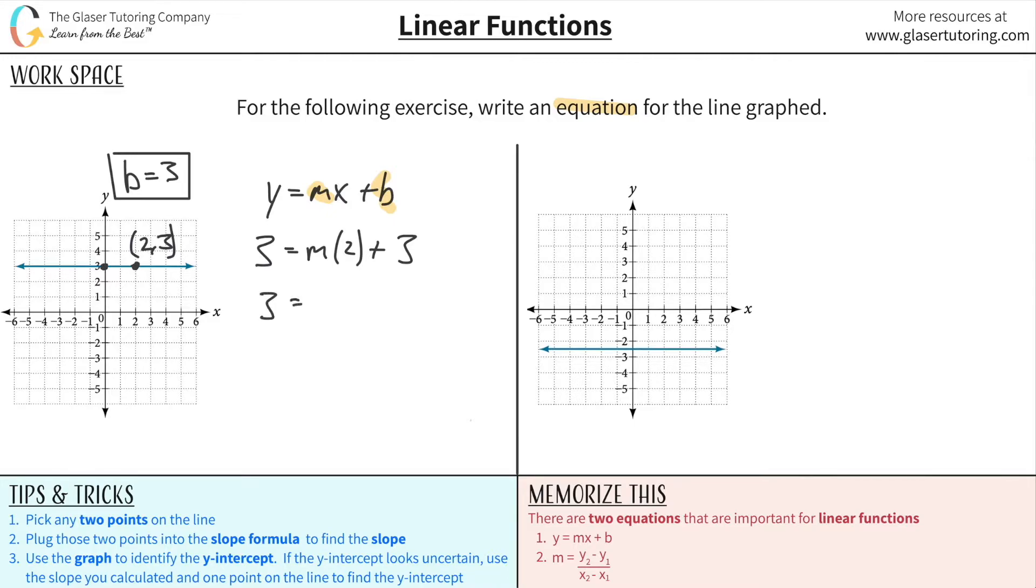So let's solve for m. So 3 is equal to 2m. I don't know why that became an x. But 2m plus 3. I got to subtract 3 from both sides. And now what we're going to get is 0 is equal to 2m. Divide out the 2 from both sides. And what do you realize? M will be equal to 0. So this is the slope.